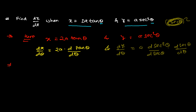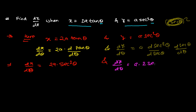So dx/dθ = 2a·sec²(θ), since the derivative of tan(θ) is sec²(θ). And dy/dθ = a times 2·sec(θ) times the derivative of sec(θ), which is sec(θ)·tan(θ). So we now have both dy/dθ and dx/dθ.